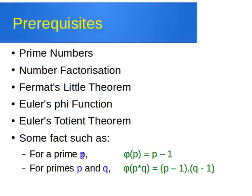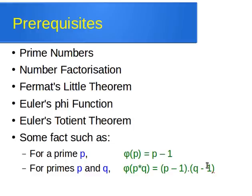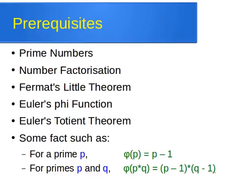For example, for a prime number p, the phi of p equals p minus 1. And for two prime numbers p and q, the phi of p times q is p minus 1 times q minus 1. That dot there just means multiplication, so we can use a star for example — it's not the dot product.